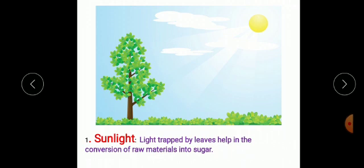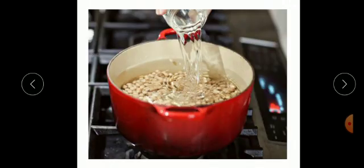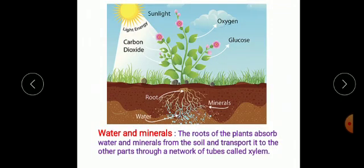Now what do you think? Is light the only requirement for preparation of food? No. Let us see what are the other requirements. Well, we also need water to cook our food. Similarly, for plants to manufacture their food along with light, water is required. The roots of the plants absorb water and minerals from the soil and transport it to the other parts through a network of tubes called xylem.